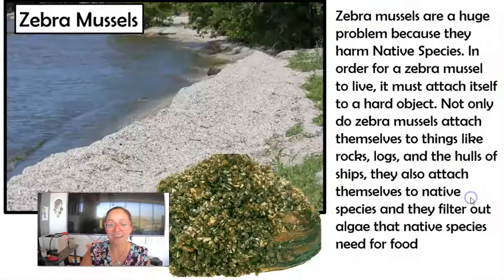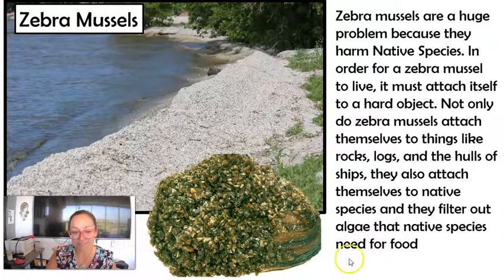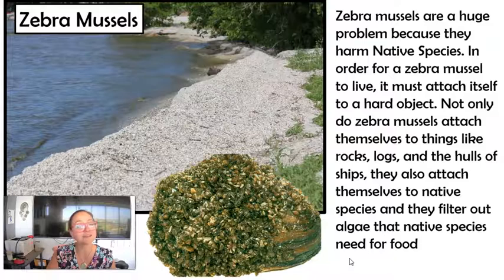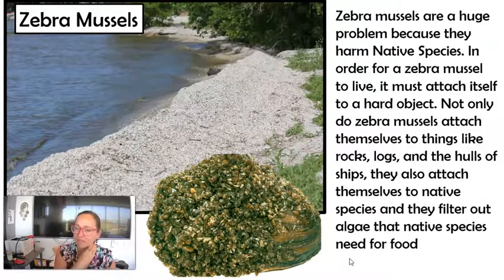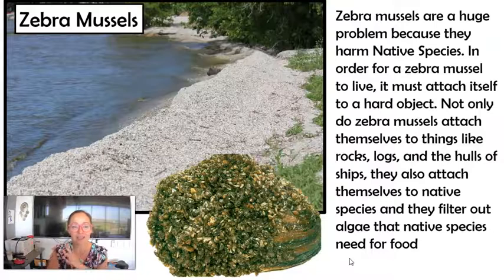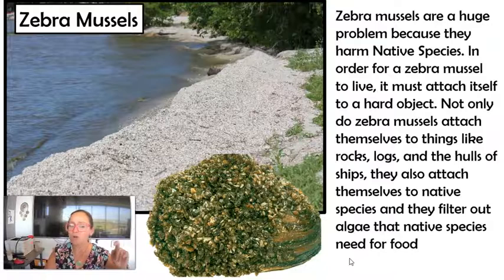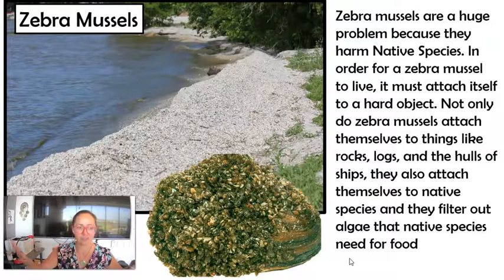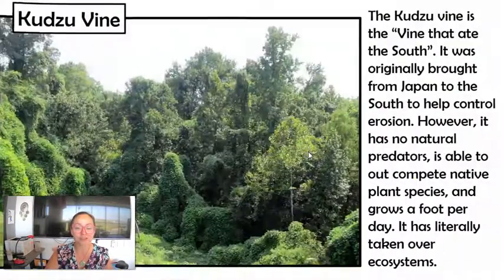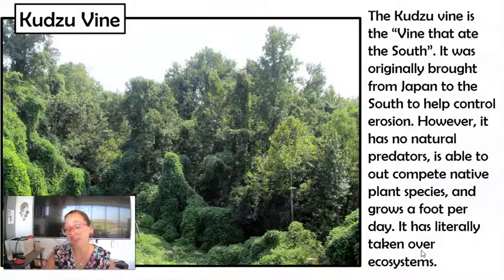Here are three examples of invasive species. First, zebra mussels were unintentionally brought to the Great Lakes of the United States. They're small mussels that grow attached to hard surfaces, and they end up covering the whole bottom of the lake. This shoreline shown is actually all zebra mussel shells — they incredibly decimated the local ecosystem.